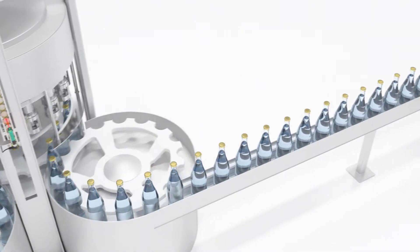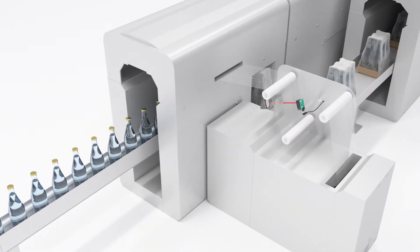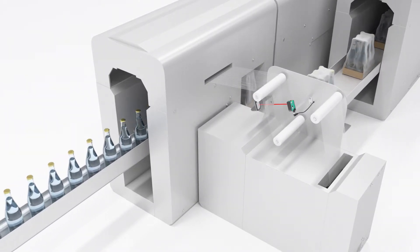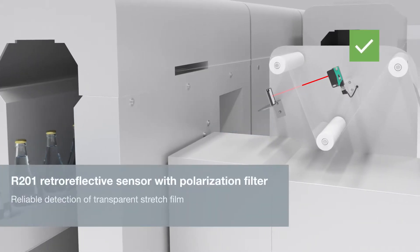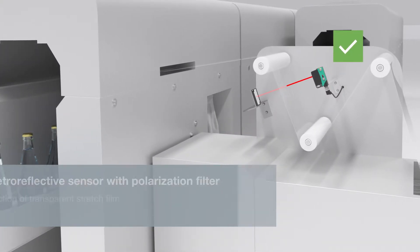The R201 also offers maximum reliability for detecting transparent objects. Thanks to the retro-reflective sensor with polarization filter, even transparent foils are no problem.